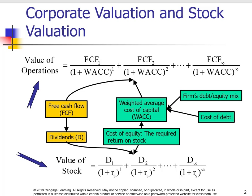The value of operations incorporates the free cash flows of the company. We will also look at the dividend valuation model. We can look at it from two points of view: value of operations or the value of the stock. The value of the stock uses dividends; free cash flow is what we use to find the value of operations. The discount rates are different — the weighted average cost of capital is used for the value of operations, and the required return from something like the capital asset pricing model is the discount rate for the value of the stock.